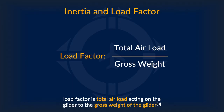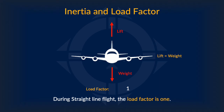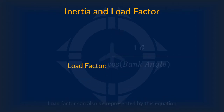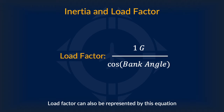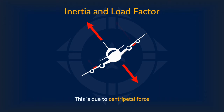The official definition of load factor is the total air load acting on the aircraft divided by the gross weight of the aircraft. During straight and level flight, the load factor is equal to 1. The units for load factor are usually represented in terms of g — at 1g, you have straight and level flight. Load factor can also be expressed with an equation: as bank angle increases, the load factor increases as well. When an aircraft rolls into a bank, the load factor increases due to centripetal force.